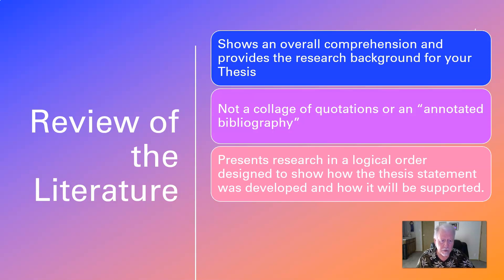The lit review presents research in a logical order designed to show how the thesis statement was developed and how it will be supported. Ultimately the review of the literature is going to report all your relevant research. You're going to do it in a logical order, which may change depending on your topic — it may be chronological, it may be topical, quite often topical, or it may be general to specific. Whatever order you decide on, that's how you will organize your notes and indicate your outline with subheads under the review of the literature.